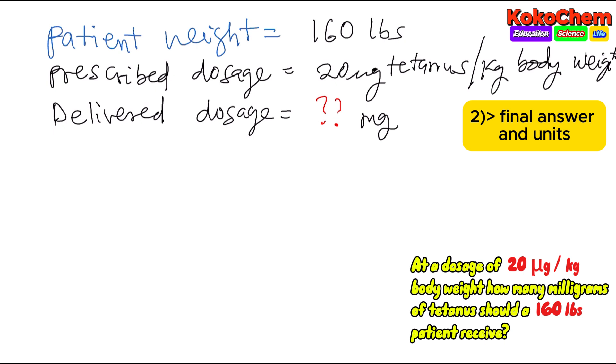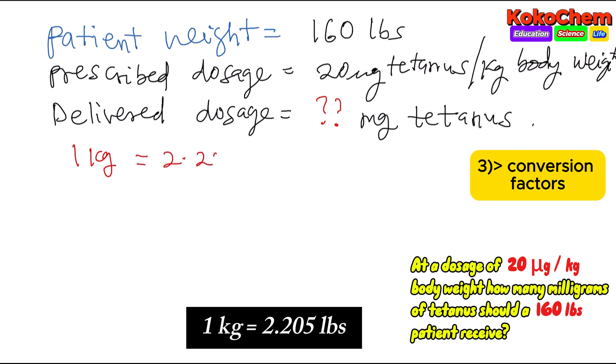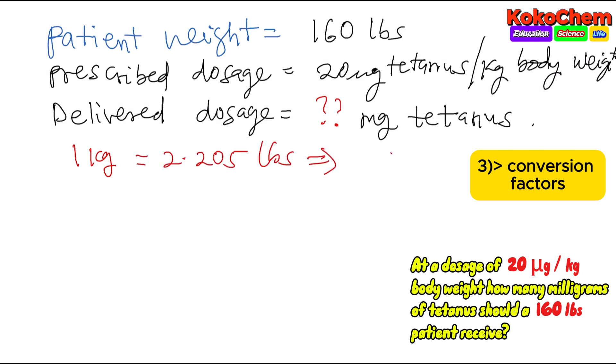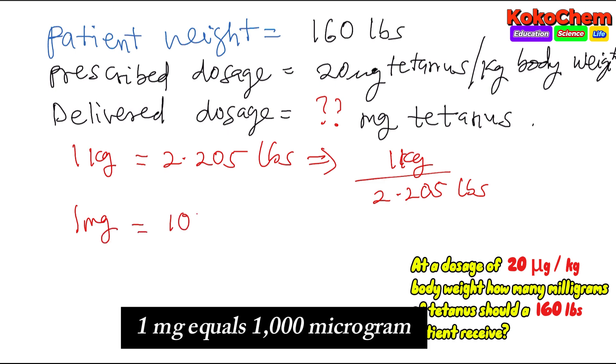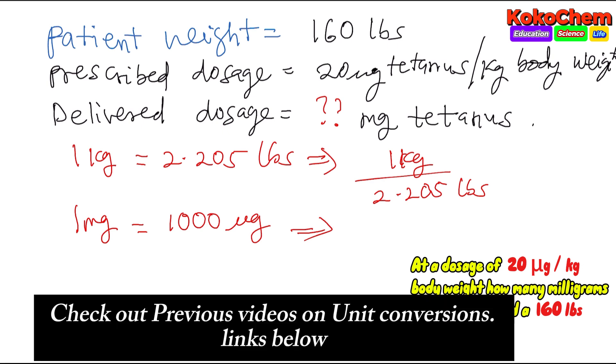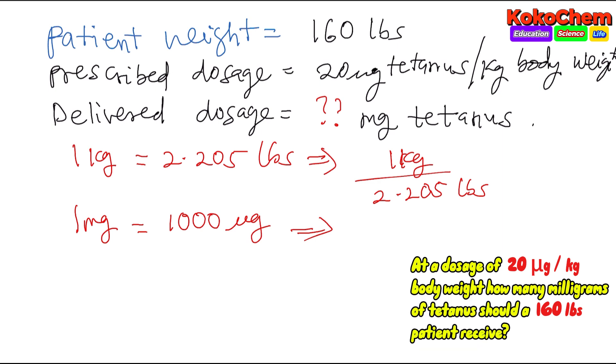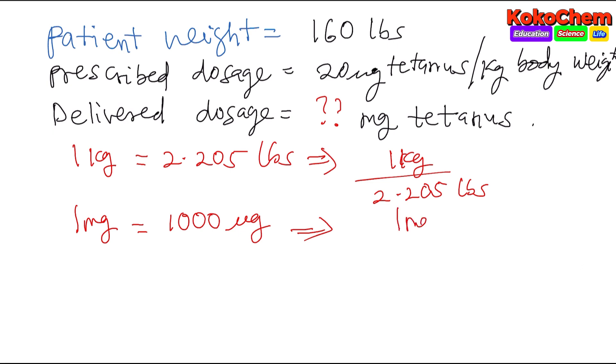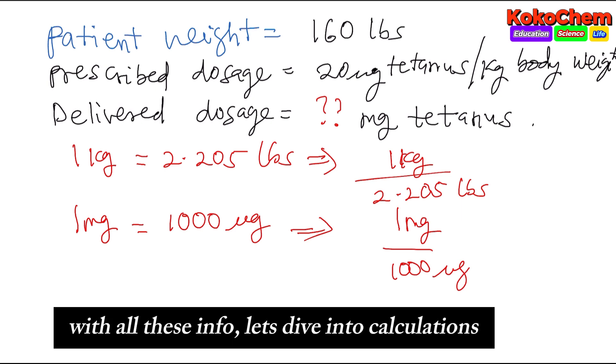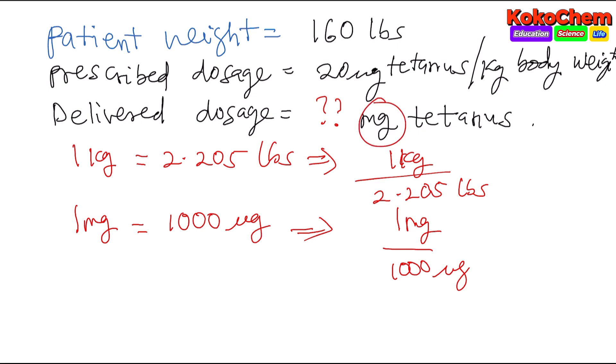Step three: identify your conversion factors. One kilogram is 2.205 pounds. One milligram is one thousand micrograms. Now we have the known information, the answer units which is milligram, and the conversion factors. We just have to set it up and then calculate it.